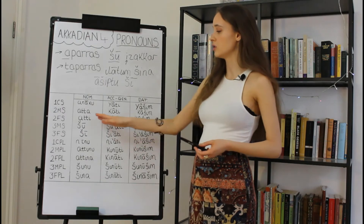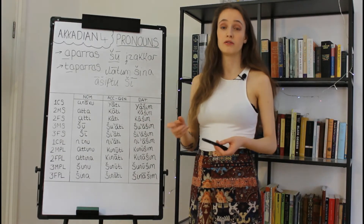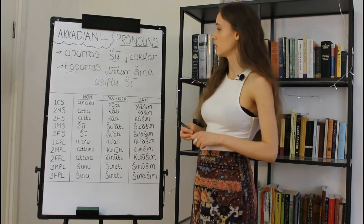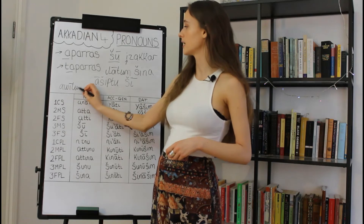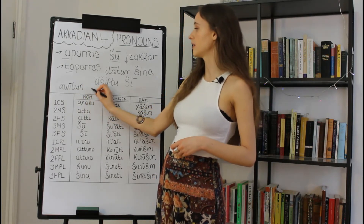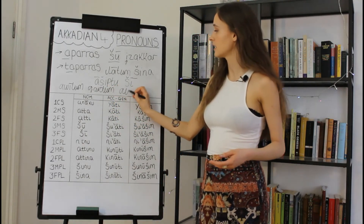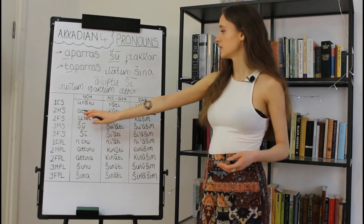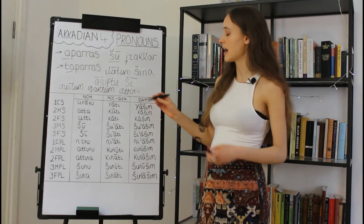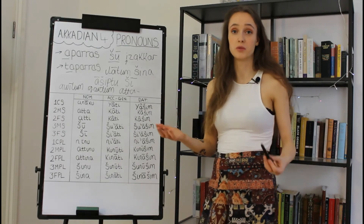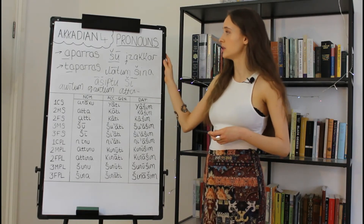The final case where nominative pronouns pop up is when they are used as the sole subject of a nominal phrase — a phrase that doesn't contain a verb. For example, 'awīlam qardam atta': 'awīlam' is the noun 'man,' 'qardam' is the adjective 'brave,' and 'atta' is our second masculine singular nominative pronoun. This translates as 'you are a brave man,' with 'atta' implying the verbal form 'to be,' acting as a verb in its absence.